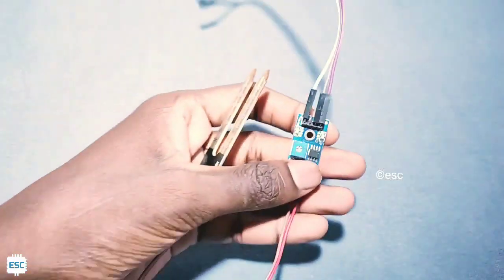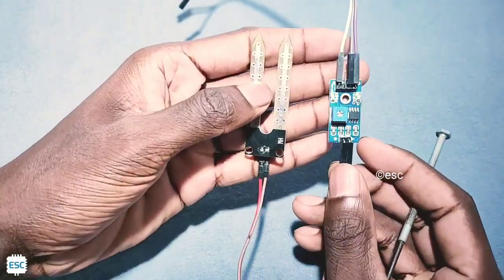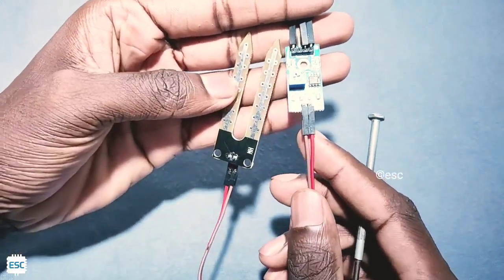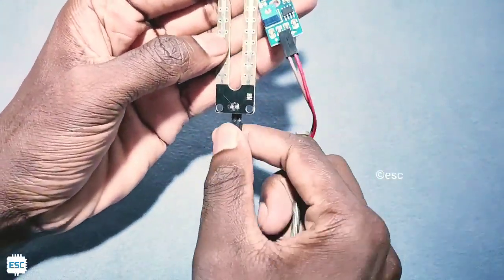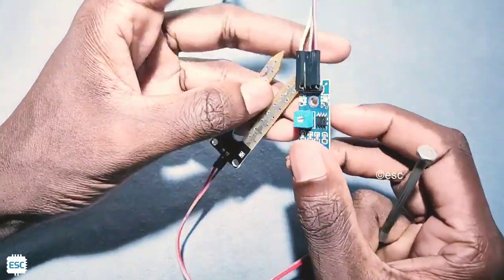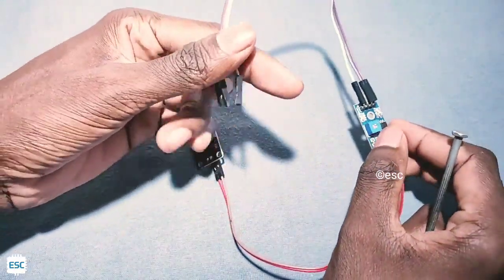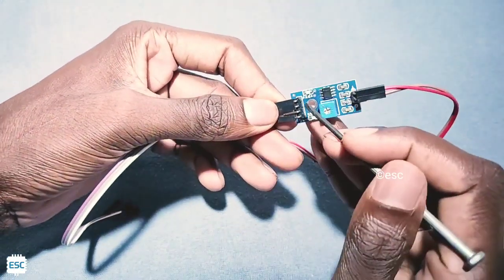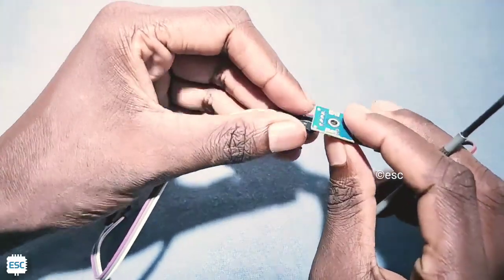First of all we need a moisture sensor. I'm using this one, this is an LM393 comparator based one. It has four pins: VCC, ground, digital output, and analog output. We are going to use the analog output. Working of this sensor is very simple - the analog value changes according to the conductivity of that lead, that means moisture. When moisture increases, the conductivity also increases.